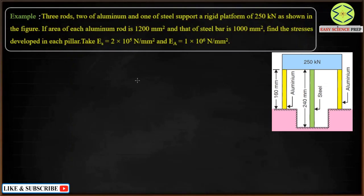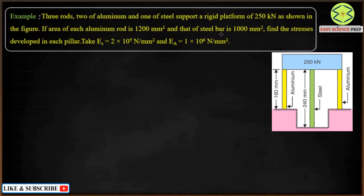Let's look at the next example, which is also based on composite bars. We have two aluminum and one steel support. The yellow bars are aluminum bars while the green bar is a steel bar, and it supports a rigid platform of 250 kN. The area of each aluminum rod is 1200 mm², the area of the steel bar is 1000 mm². We need to find the stresses developed in each bar, and Young's modulus values for both steel and aluminum are also given.